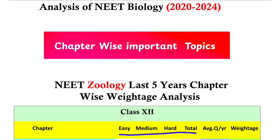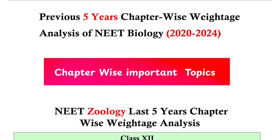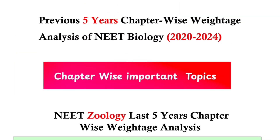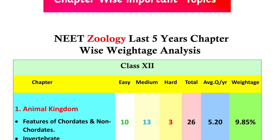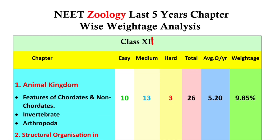So the first thing we have to do is work through this chapter. I will tell you a little bit about the whole discussion to help. First of all, what do we have to do? We have to do the chapter in the last five years — identify the high-weight chapter, identify the important topics, and then answer questions from the first chapter.